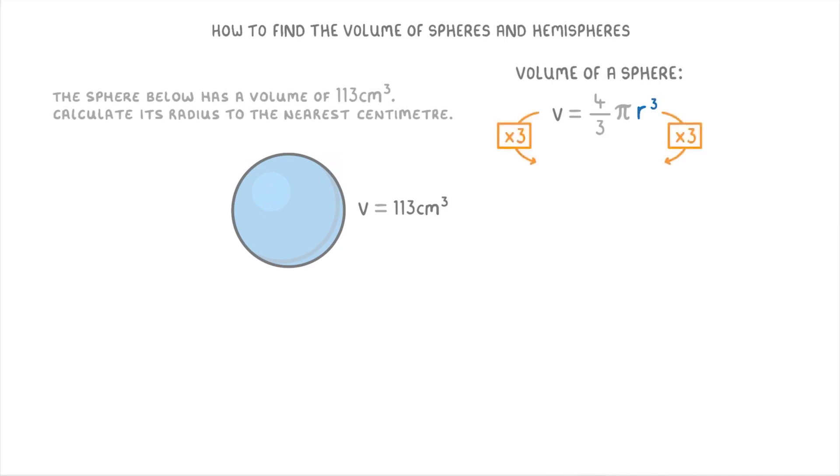To do this, we can multiply both sides by 3 to get 3v equals 4 pi r cubed. Then divide both sides by 4 pi to get 3v over 4 pi equals r cubed. And then finally cube root either side to find that the cube root of 3v over 4 pi equals r.